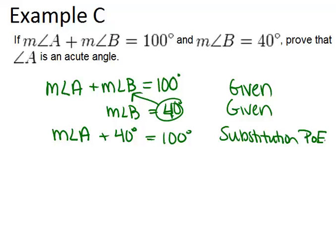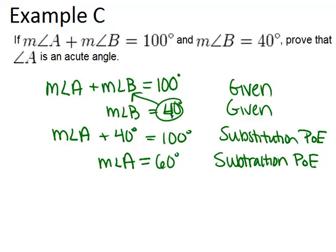Next, I can subtract 40 from both sides in order to see what the measure of angle A is. So the measure of angle A equals 60 degrees because of the subtraction property of equality, because I was allowed to subtract 40 degrees from both sides.